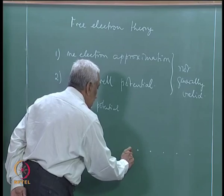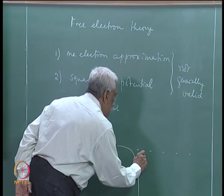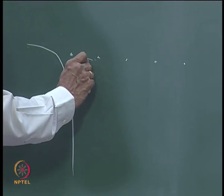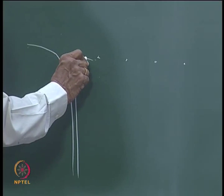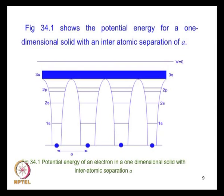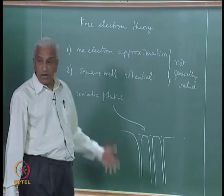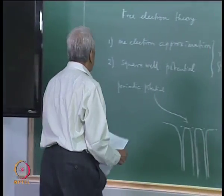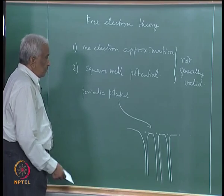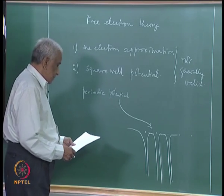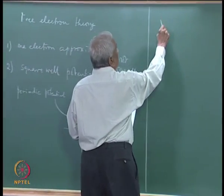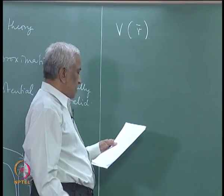The potential repeats itself everywhere, forming a periodic potential which has the periodicity of the crystal lattice. We have to consider the motion of the electron, given by the Schrödinger equation in quantum mechanics, subject to this periodic potential V(r) which has the periodicity of the crystal lattice.